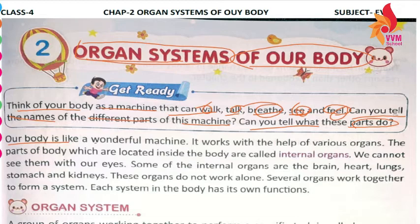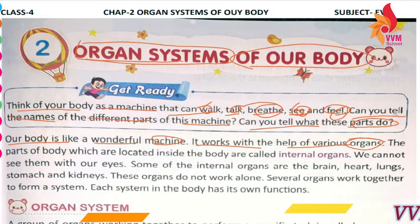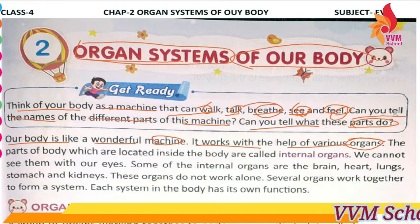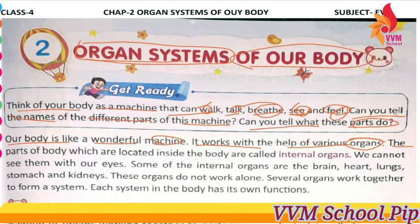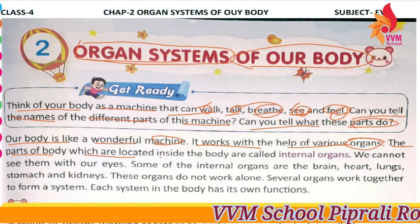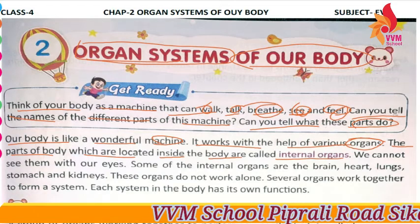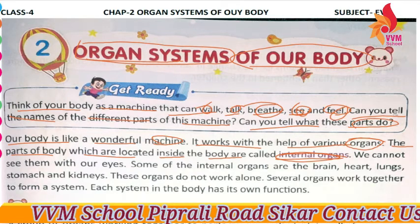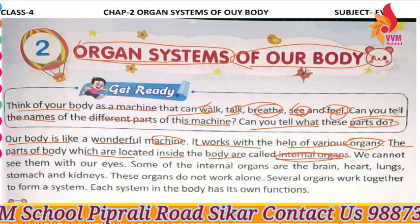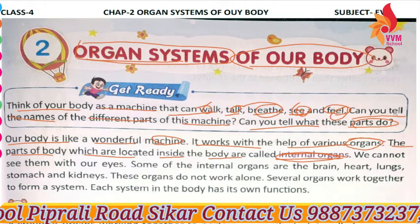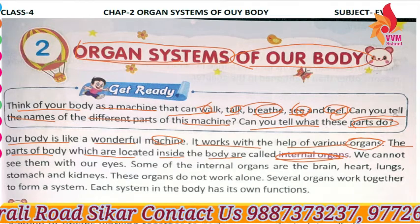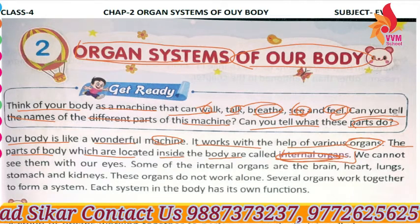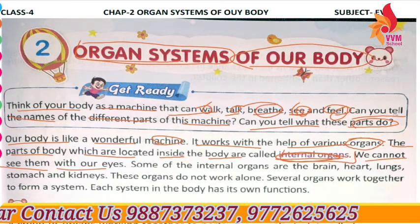Our body is like a wonderful machine. It works with the help of various organs, and different organs work together with their help. The parts of the body which are located inside the body are called internal organs. These are parts of the body which you cannot see — they are located inside. We cannot see them with our eyes.